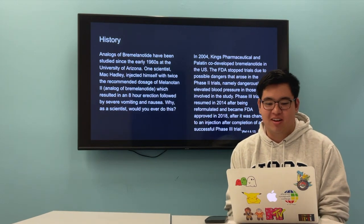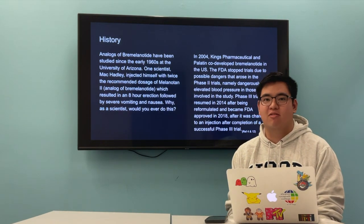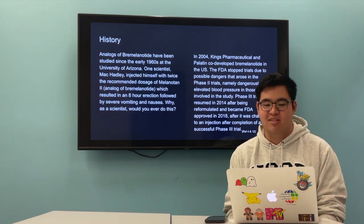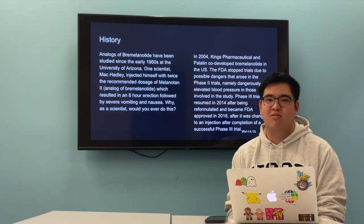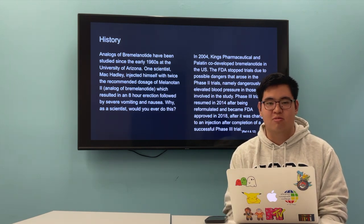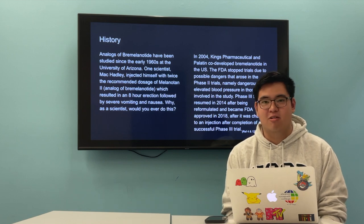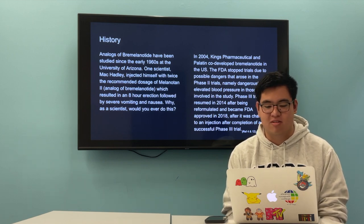So the history of bremelanotide. Analogues of bremelanotide have been studied since the early 1960s at the University of Arizona. One scientist, Mac Hadley, injected himself with twice the recommended dosage of melanotan-2, which is an analog of bremelanotide. He suffered an eight-hour erection followed by extreme vomiting and nausea.